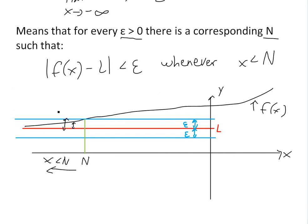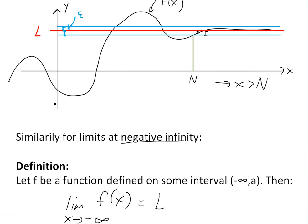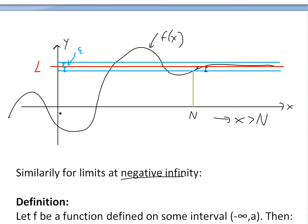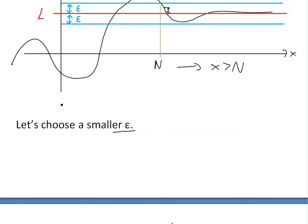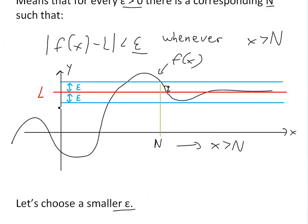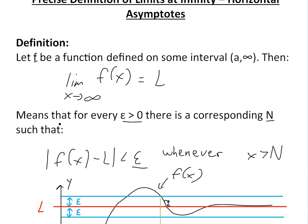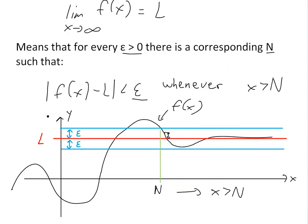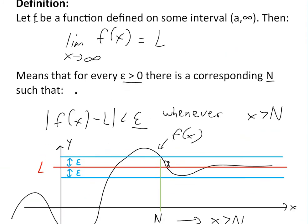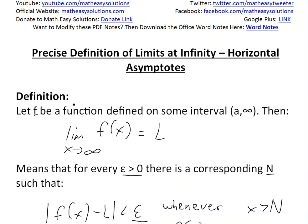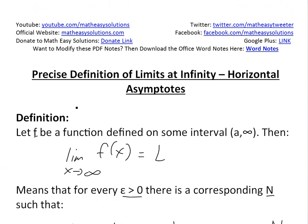That's all for today. I hope you learned from this precise definition of limits at infinity and horizontal asymptotes. Remember, all these limits correspond to horizontal asymptotes. You can always download these notes in the Dropbox link below, and stay tuned for another Math Easy Solution.